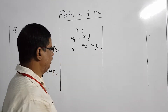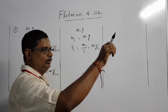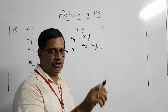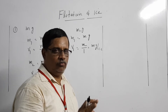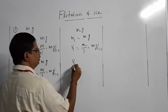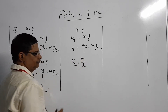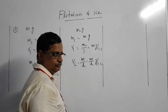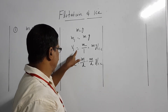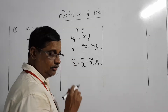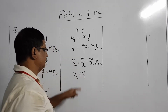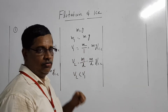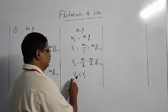Now let the ice melt. The lead shot will sink to the bottom of the container. The volume of water displaced by the lead shot when it sinks (V2) equals its own volume — mass of lead shot divided by density of lead — which equals M divided by D gram per cubic centimetre. Since the density of lead D is greater than 1, V2 is less than V1.